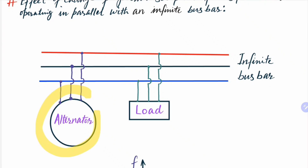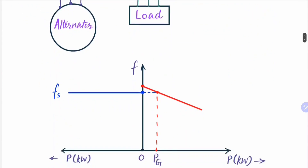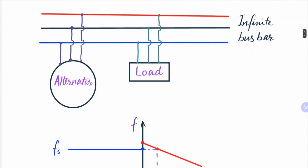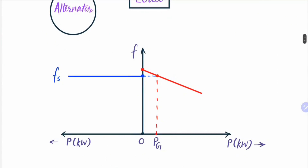The moment when this alternator is synchronized, the active power supplied by this alternator is very small and the reactive power supplied is either very little or not at all. If we plot the fp characteristic of this system — the alternator connected to the infinite bus bar side by side — we can observe that for the infinite bus the frequency will remain constant.